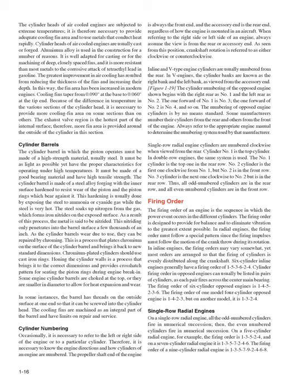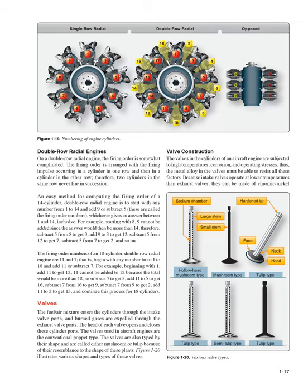On a single-row radial engine, all odd-numbered cylinders fire in numerical succession, then all even-numbered cylinders fire in numerical succession. On a 5-cylinder radial engine the firing order is 1, 3, 5, 2, 4; on a 7-cylinder radial it is 1, 3, 5, 7, 2, 4, 6; and on a 9-cylinder radial it is 1, 3, 5, 7, 9, 2, 4, 6, 8. On a double-row radial engine, the firing order is somewhat complicated — a firing impulse occurs alternately in cylinders of each row, so two cylinders in the same row never fire in succession. For a 14-cylinder double-row radial engine, compute the firing order starting with any number from 1 to 14 and adding 9 or subtracting 5. For an 18-cylinder double-row radial engine, the firing order numbers are 11 and 7 — begin with any number from 1 to 18 and add 11 or subtract 7.